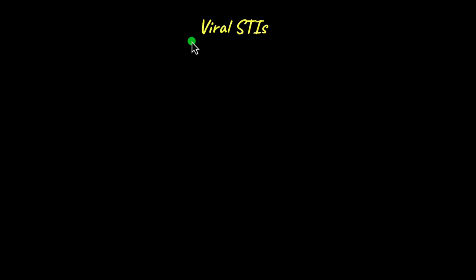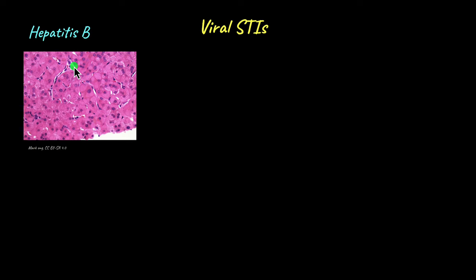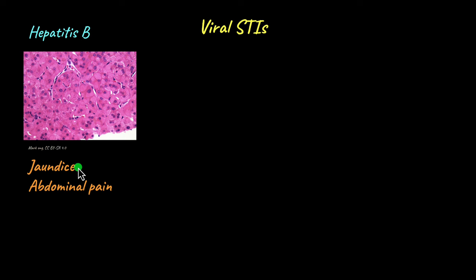Moving on to viral STIs — a common one is hepatitis B, caused by the hepatitis B virus. Unlike hepatitis A and C, which are transmitted through other routes, hepatitis B is sexually transmitted. There are two types of hepatitis B infection: acute and chronic. The acute stage involves body ache, fever, and can lead to jaundice or yellowish coloration of the skin.